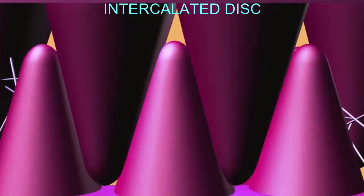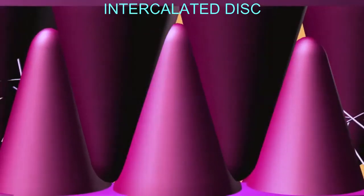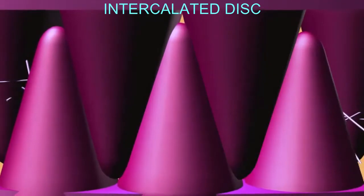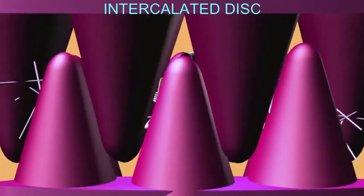Of the three types of muscle, cardiac muscle is unique in the intercalated discs which join neighboring cardiac muscle fibers.